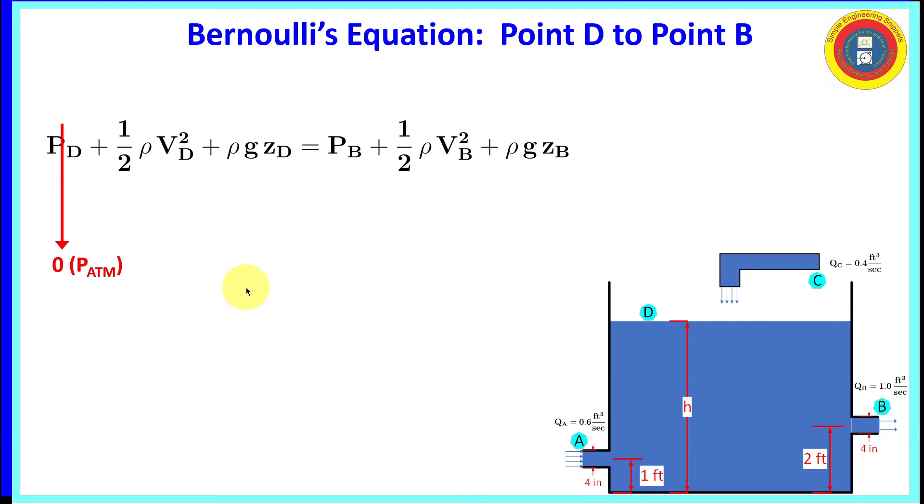All right, let's simplify. Delta is a free surface. And it's at atmospheric pressure, so we're going to call that zero. It's a large tank assumption. We assume that the dynamic pressure term is negligible, or zero. The elevation at delta, that is our unknown height that we're looking for.